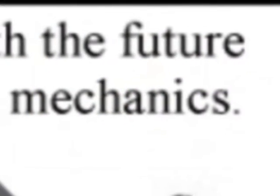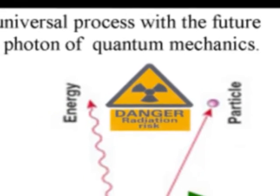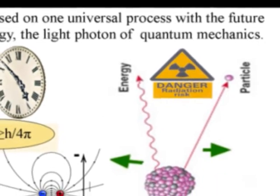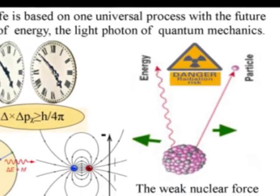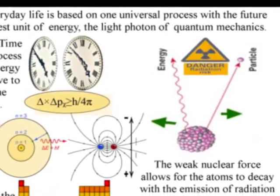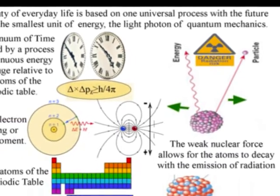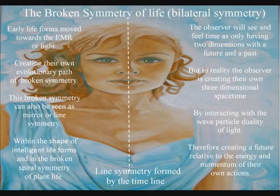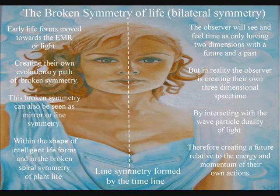It is interesting that when we have an atom with an unstable atomic nucleus emitting radiation, there is the potential that the future will be relative to that radioactivity. This might be in the form of a potential cancer risk. I like to think that this represents the delicate symmetry of space and time that life is based upon being broken by the radiation.